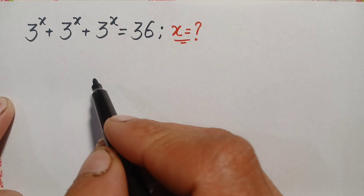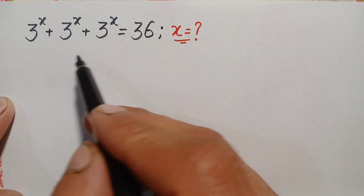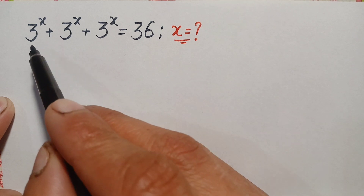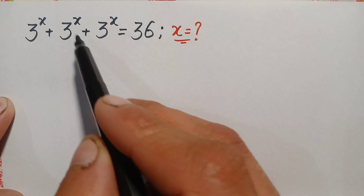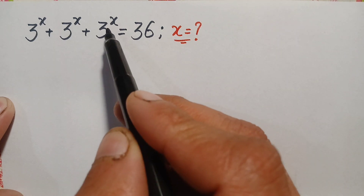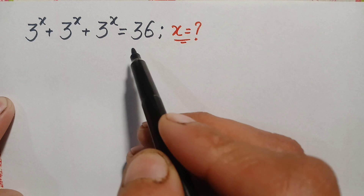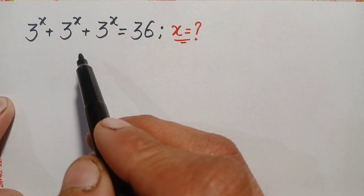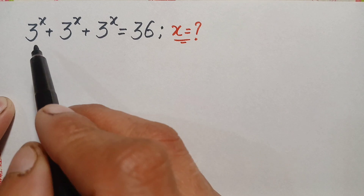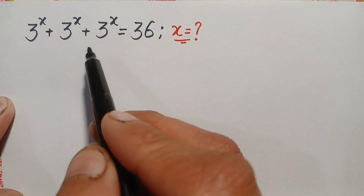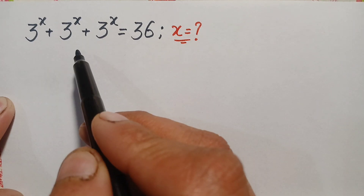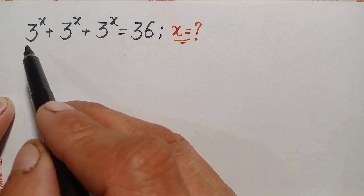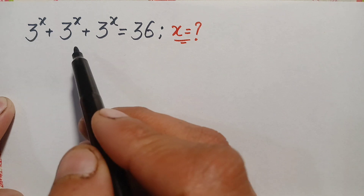Hello everyone, you are welcome. How to solve this beautiful exponential equation: 3 raised to power x plus 3 raised to power x plus 3 raised to power x is equal to 36. Here we will try to find the value of x. Looking at the left hand side, the same number 3 to the power x is added three times, so we can take out 3 to the power x as a common factor.